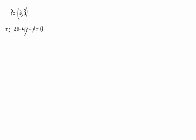We have the point P equals (2, 3), and the equation of a straight line R: 2x - 4y - 1 = 0. We are asked to calculate the distance from P to R.